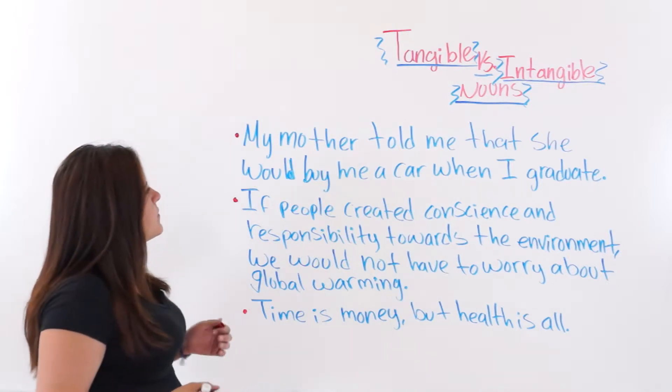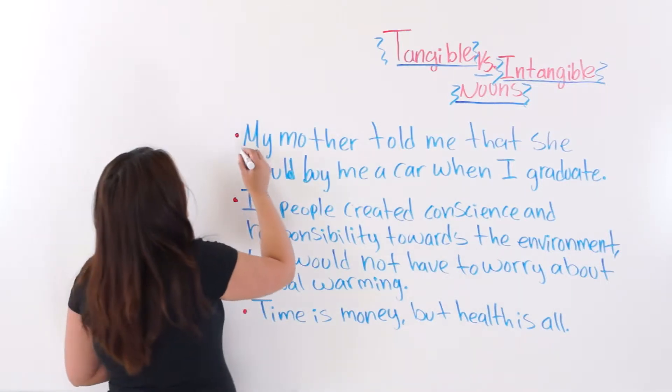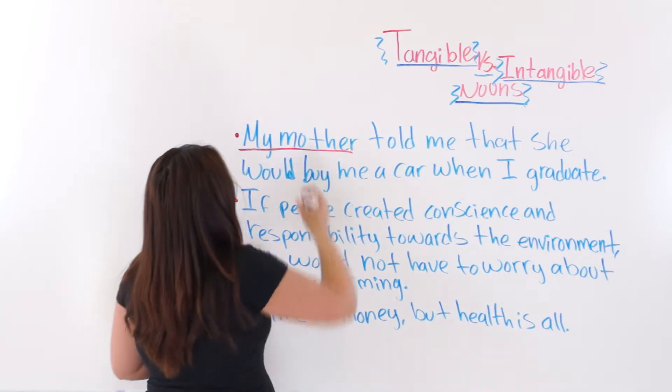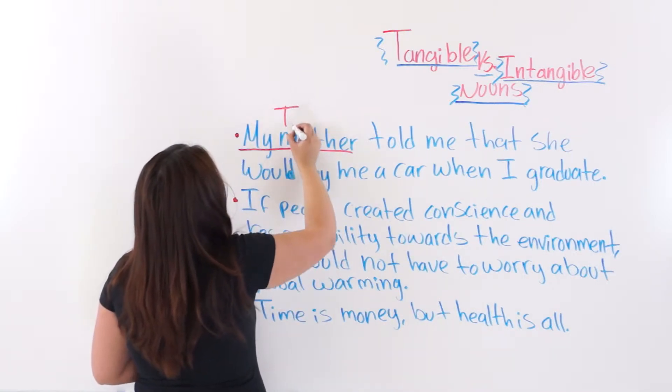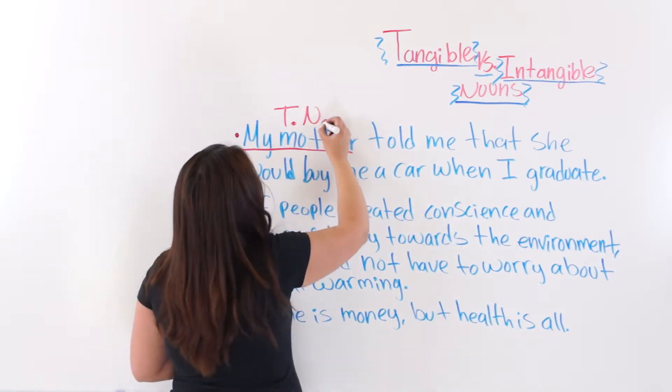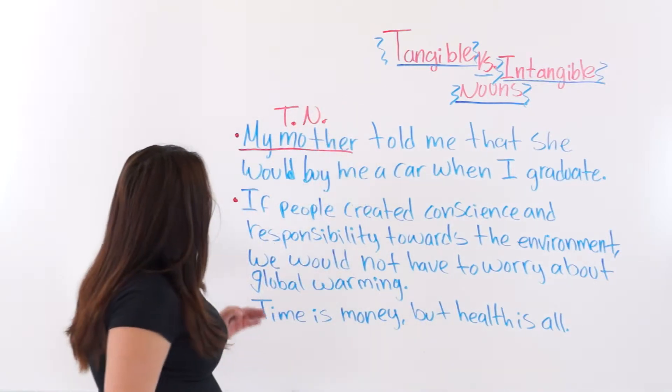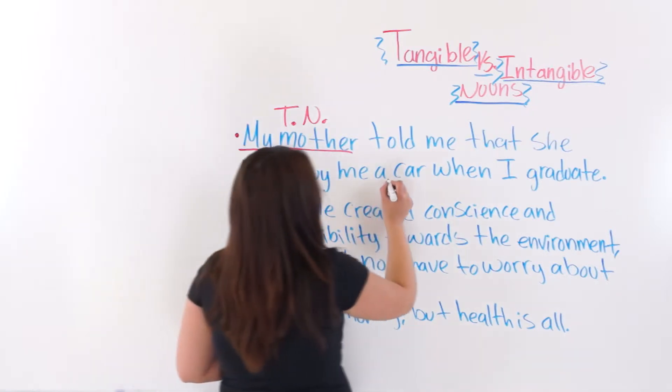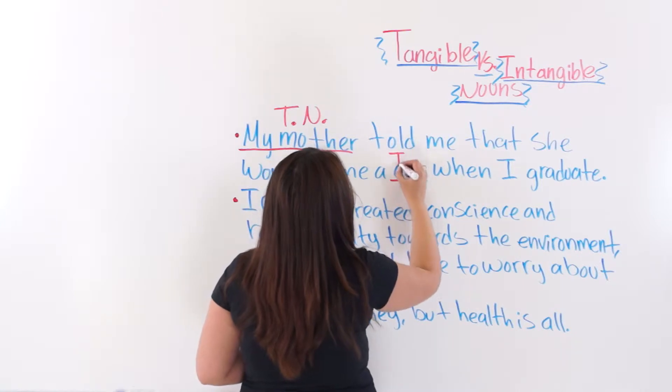The first example says, my mother told me—my mother is our first noun, so it's a tangible noun. We're just going to put a T, tangible. Well, tangible noun. Now, told me that she would buy me a car. Car is a tangible noun also.